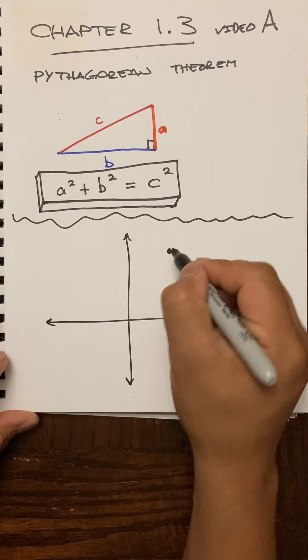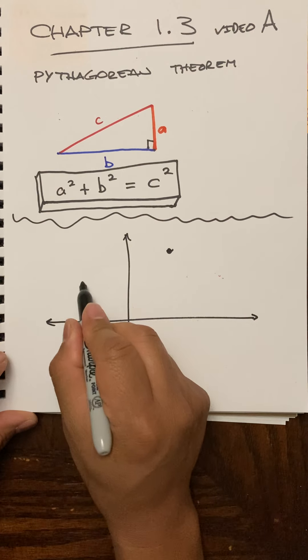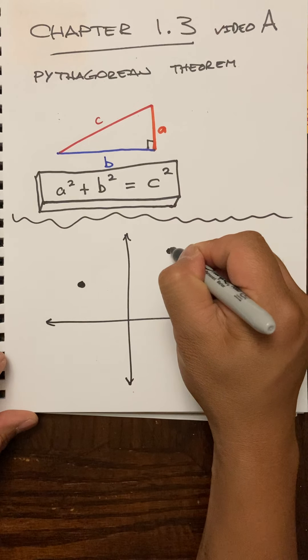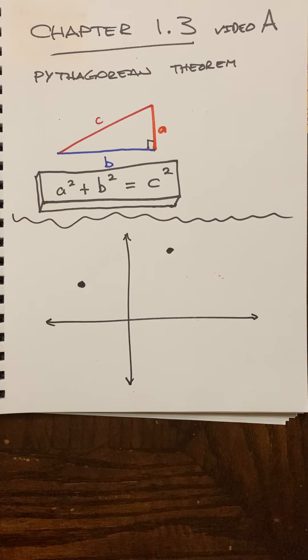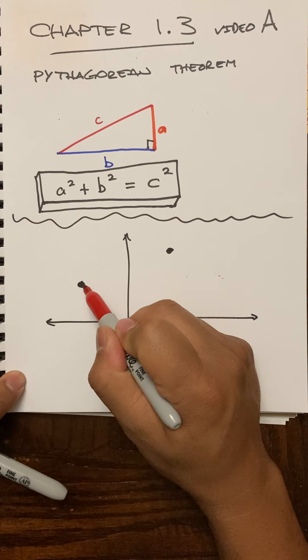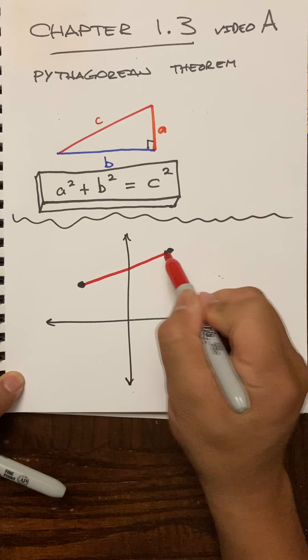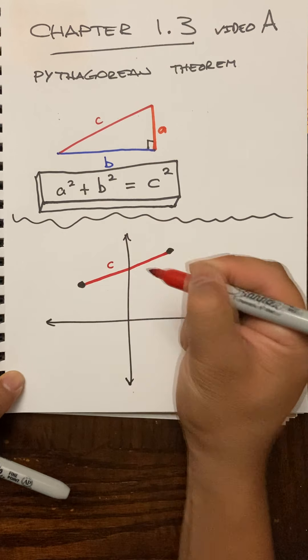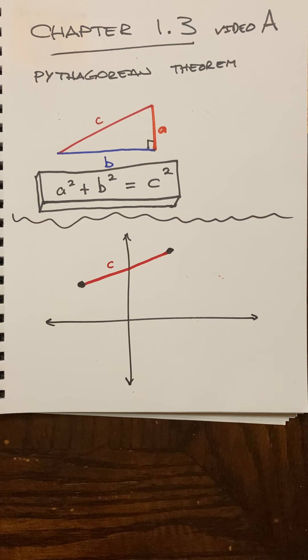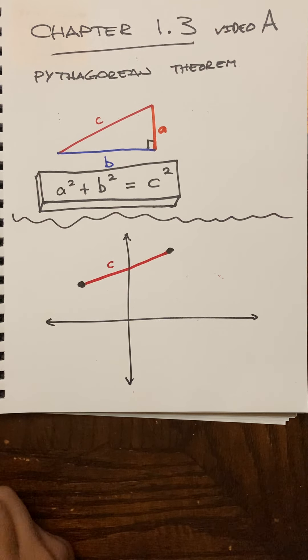Here's a point, and let's say I want to find out the distance between the two. And in this case that's our c, right? And we're just going to use the Pythagorean theorem.